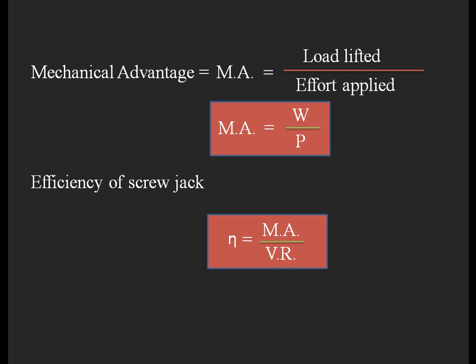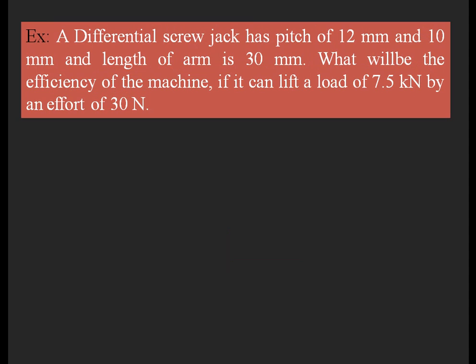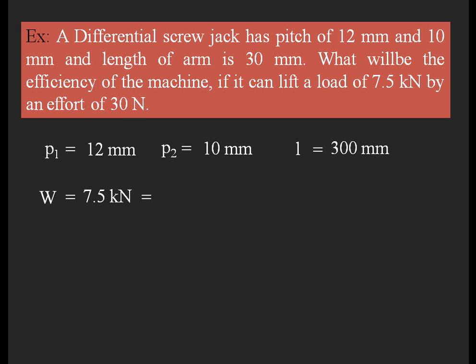Now let's solve an example. A differential screw jack has pitches of 12 mm and 10 mm. The lever arm length is 300 mm. Find the efficiency if it can lift a load of 7.5 kilo-newtons by an effort of 30 newtons. Given data: p1 = 12 mm, p2 = 10 mm, l = 300 mm, W = 7500 N, P = 30 N.